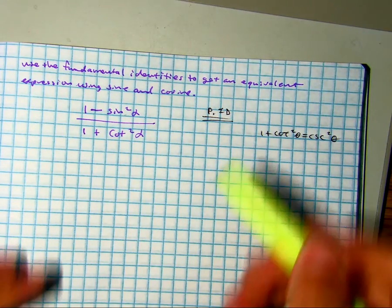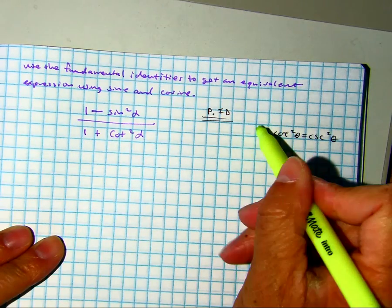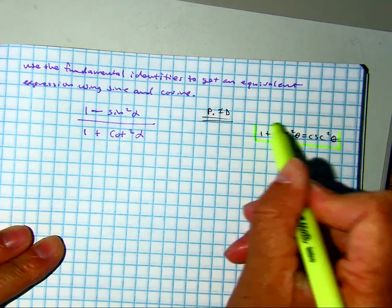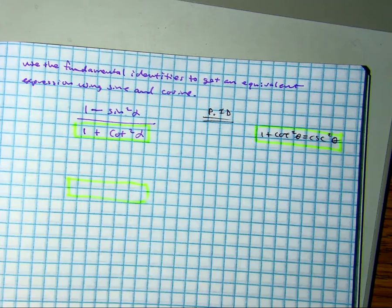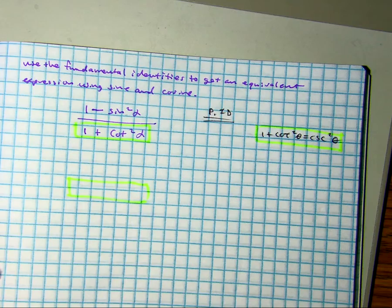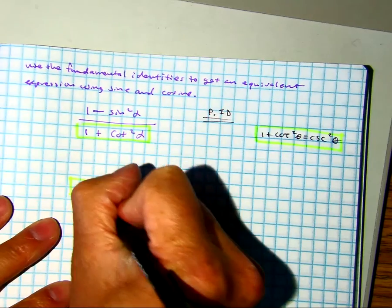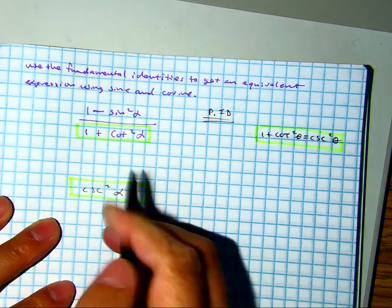So, every time I see 1 plus cotangent squared of an angle, we're not going to write that. We're going to write, what did we write, class? Cosecant squared. The angle is alpha, okay?